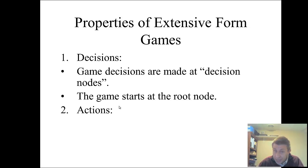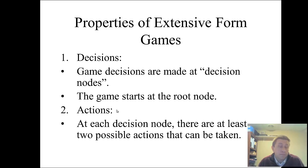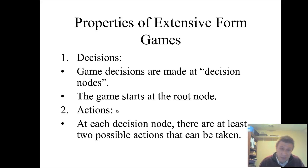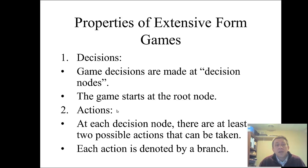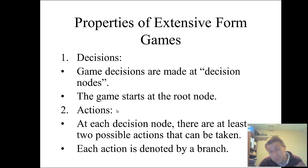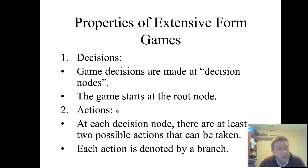The actions the player could take at the decision node are indicated by what we call branches. At each decision node you have to make a decision, so there must be at least two possible actions — if there were only one, you don't really have a decision. These are called branches of the game tree, and each action is denoted by a branch. You will be labeling the action to take right on the branch.